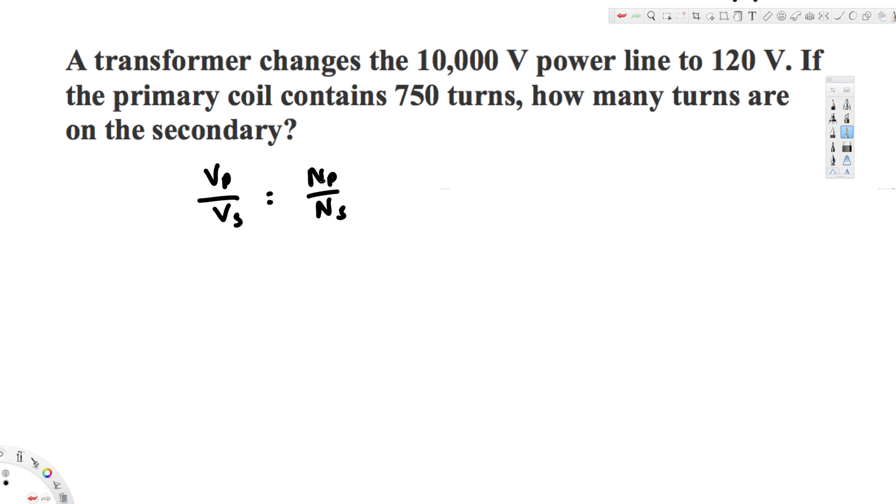That's equal to N primary over N secondary. V primary is 10,000 volts divided by V secondary, that is 120, that is equal to N primary, primary is 750.